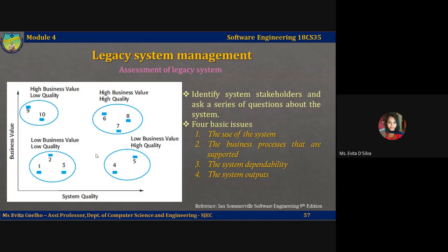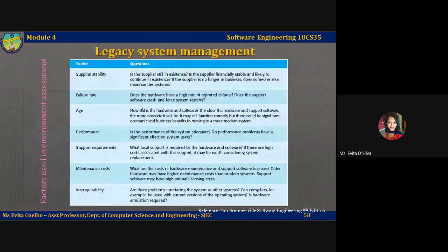The third cluster is high quality and low business value. These are systems that don't contribute much to the business but which may not be very expensive to maintain because they have high quality software. It is not worth replacing these systems, so normal system maintenance may be continued. The last cluster is high business value and high quality. These systems have to be kept in operation; however, their high quality means that you don't have to invest heavily in transforming or replacing them — normal system maintenance should be continued.